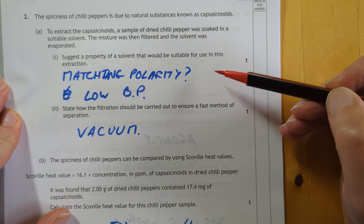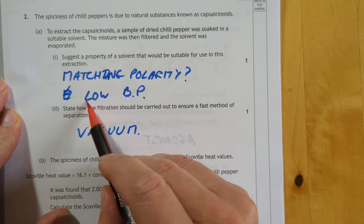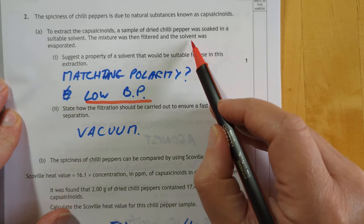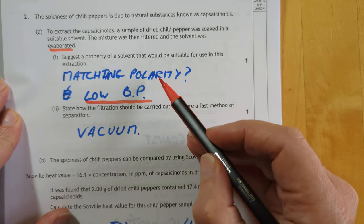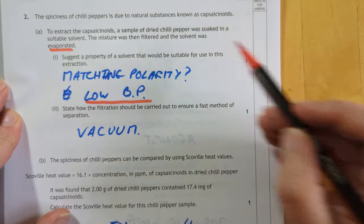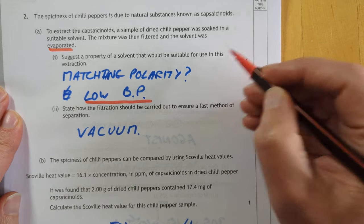Property of a solvent would be useful in this extraction. I'm not sure which of these two, but that one probably seems a more sound answer because the solvent has evaporated, and that's tricky to do with a higher boiling point. But obviously you want the solvent polarity to match to your capsaicinoid that you're trying to dissolve. I think either of these two would be good.